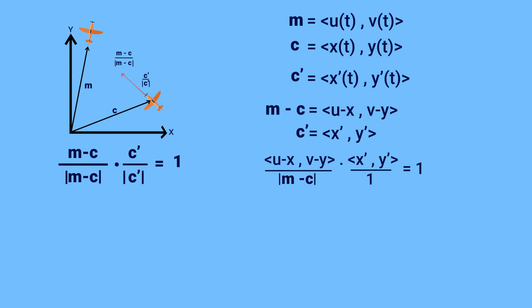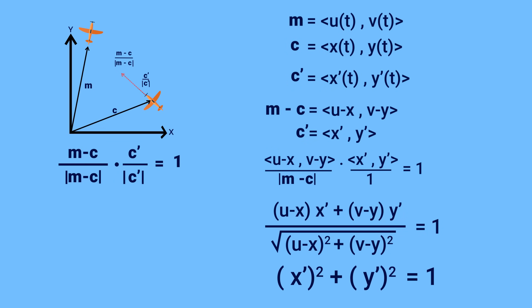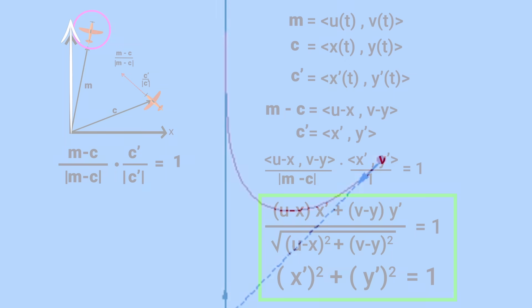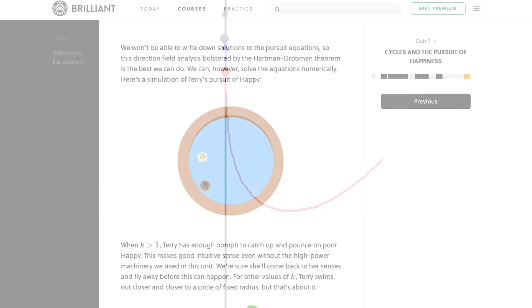Then we just have to do the dot product, which leaves us with this differential equation. You'll notice I actually wrote out the expression for the magnitude of M minus c on the bottom here. The only problem with this is that there are two unknown functions, x and y, which means we need another equation. But that would just be the one saying the chasing plane is flying at a constant speed of one. Now we have a system of differential equations that can be solved. If, for example, we assume the target plane is flying straight along the y axis, then this would be the path of the chasing plane, shown in red. If the target plane were flying in a circle, then you'd get something very different, shown here on Brilliant's site.